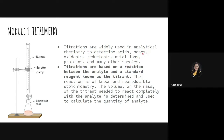For example, when there are chemical spills and we want to know how high the concentration of contaminant materials is, we can use titrometry for that. Titrations are based on a reaction between the analyte, which is the unknown — we don't know its concentration — and a standard reagent known as the titrant, which has a known concentration. The reaction is of known and reproducible stoichiometry, which is like balancing a chemical equation.